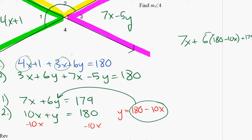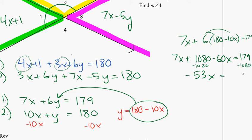So now I've got to distribute. 7x plus what's 6 times 180? 1080 minus 60x equals 179. So I can combine 7x and minus 60x and I get negative 53x. Subtract 1080 from each side. And what do I have on the other side? Negative 901. Divide each side by negative 53 and what do I get? 17.